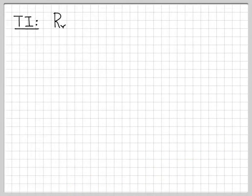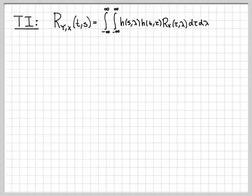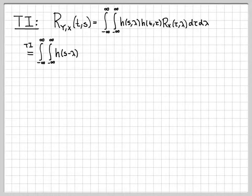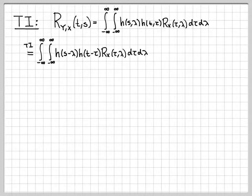Now let's do something similar assuming time invariance of the system. Starting with the general expression for the cross-correlation function, if I have a time-invariant system, my impulse responses are not two-dimensional, they're one-dimensional. So instead of h of s comma lambda, I have h of s minus lambda. Similarly, h of t comma tau becomes h of t minus tau. The autocorrelation function remains the same — I'm not assuming wide-sense stationary here, just a time-invariant system.